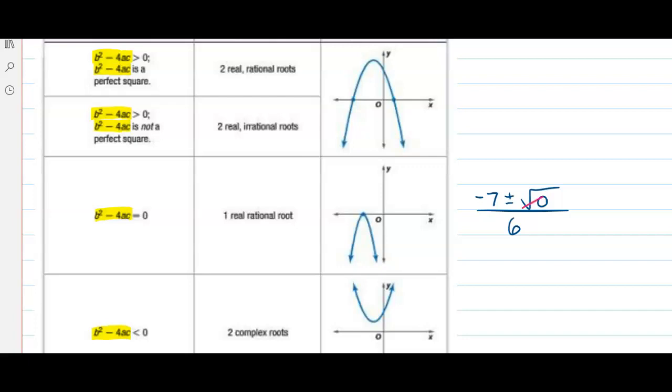we are adding and subtracting 0. So negative 7 plus 0 over 6 and negative 7 minus 0 over 6.